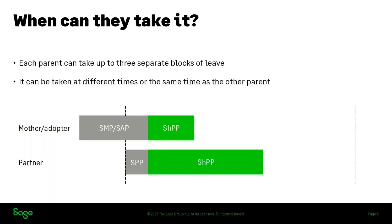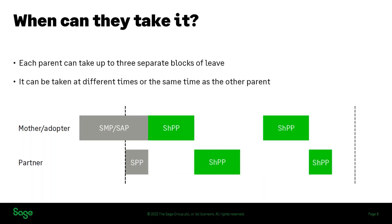Other possibilities include taking some shared parental leave and pay at the same time — where the SMP is cut short, they're off together for a period, and the partner stays off a little longer to use up the remainder of the entitlement. Or they could split it into blocks of leave, with gaps in between, as long as the shared parental leave and pay all occurs within the first year of the baby's life. In the case of maternity, you get up to the child's first birthday to use the shared entitlement.